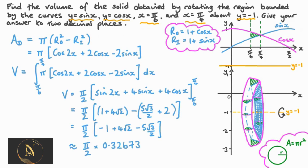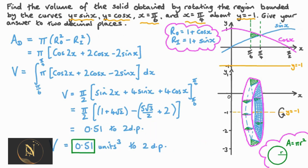Evaluating inside the parentheses to 5 decimal places gives pi over 2 multiplied by 0.32673, which evaluates to 0.51 to 2 decimal places. Therefore, the volume of the solid obtained by rotating the region bounded by y equals sine x, y equals cosine x, x equals pi over 6, and x equals pi over 4, about the line y equals negative 1, is 0.51 cubic units to 2 decimal places.